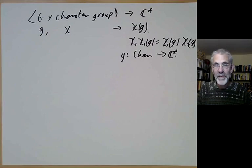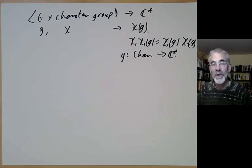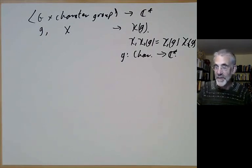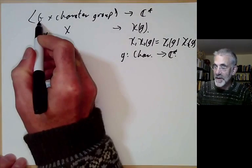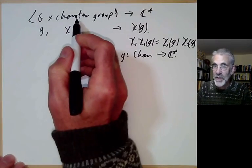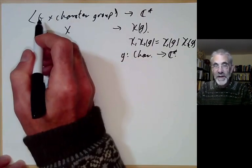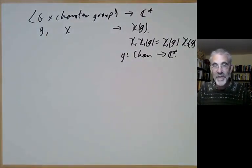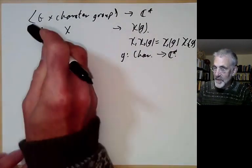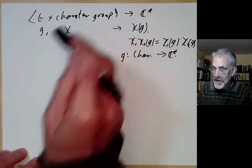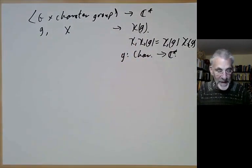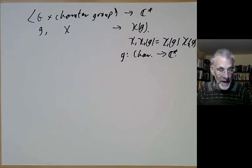If you've done linear algebra, there's something similar for vector spaces: any vector space has a dual, and the dual of the dual of a vector space is the vector space you first thought of. Characters of finite abelian groups are kind of similar.